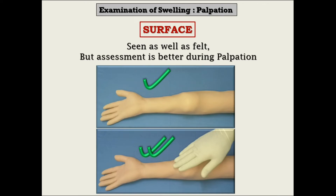Surface is a feature which is both seen and felt — it is a common finding in both inspection and palpation. But still, palpation is more informative than inspection. Let us understand this with an example.